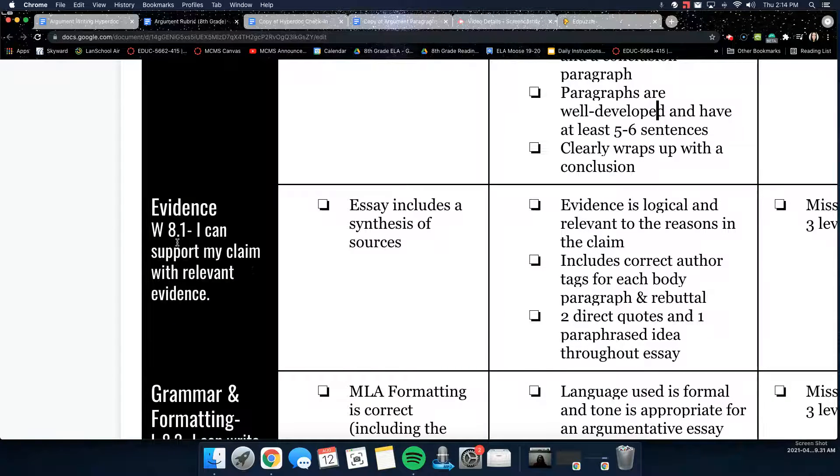The next one under W8.1 again is, I can support my claim with relevant evidence. You need to make sure that the evidence you're using is logical and relevant to the reasons in your claim. You need to make sure that you're citing your sources and including correct author tags for each body paragraph and your rebuttal. That means your introduction and your conclusion do not need to have sources cited in them. And then make sure that you include two direct quotes and one paraphrased idea throughout the essay.